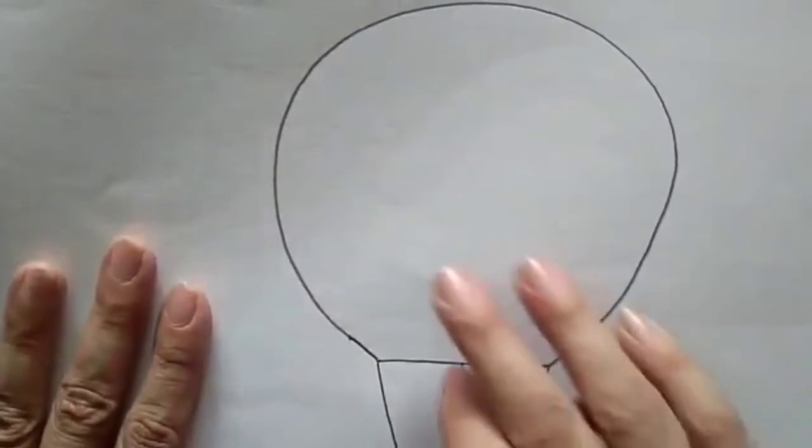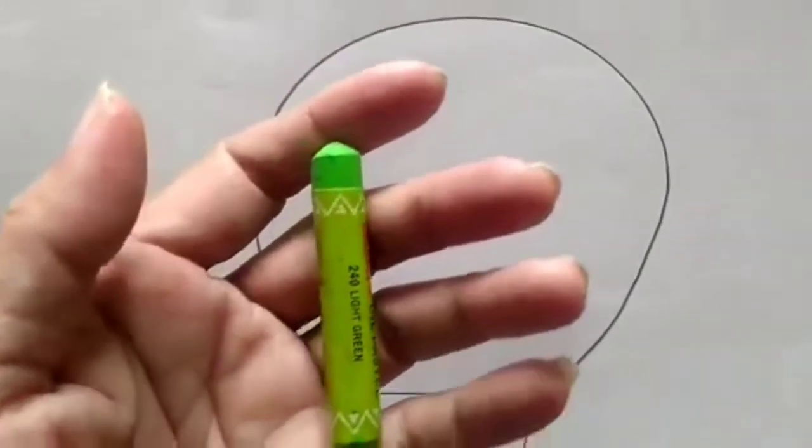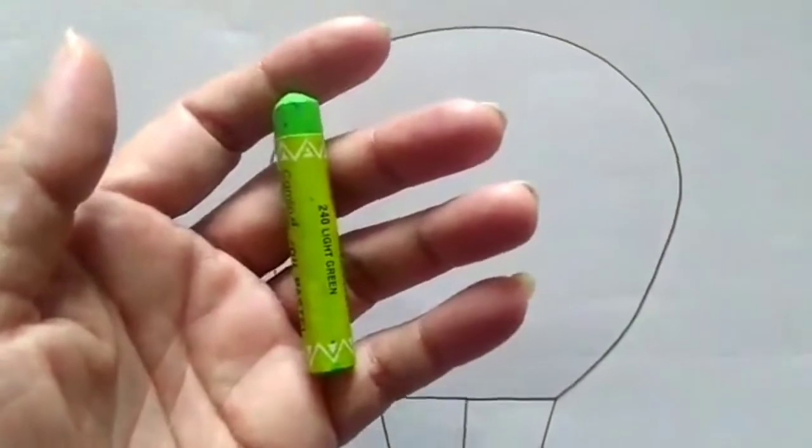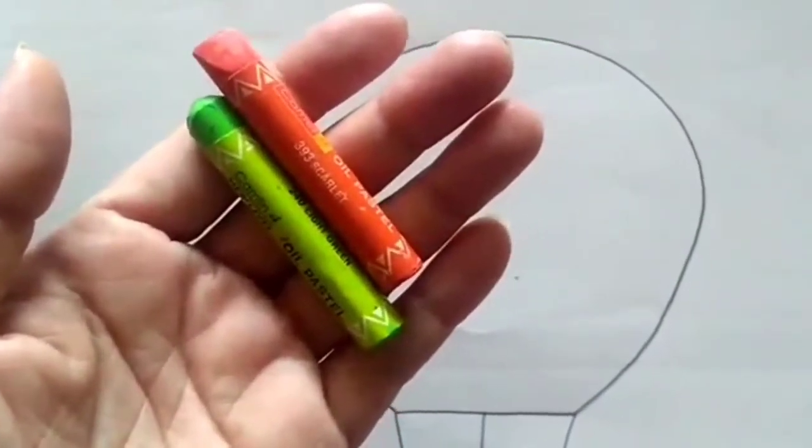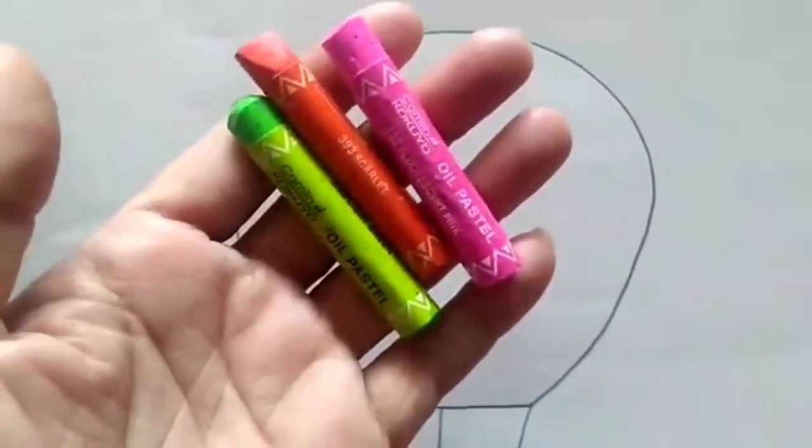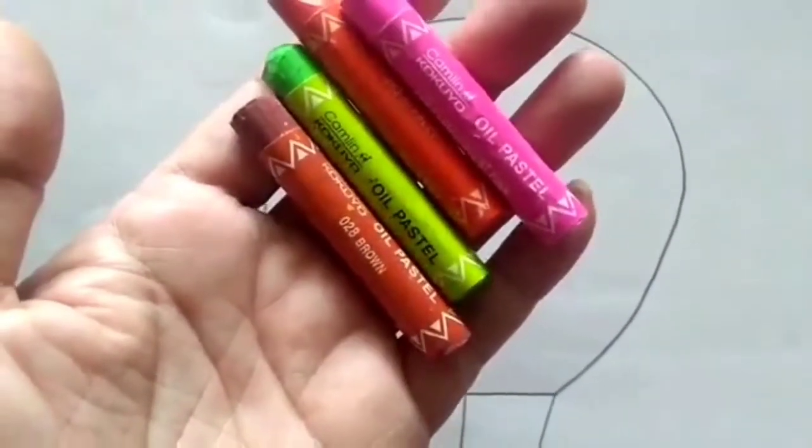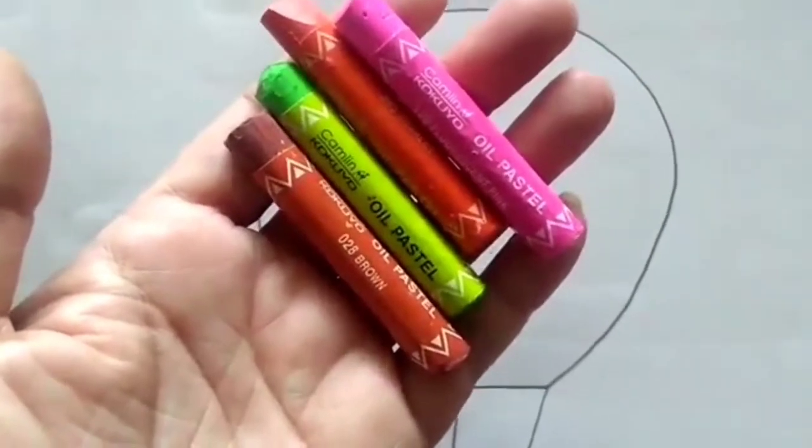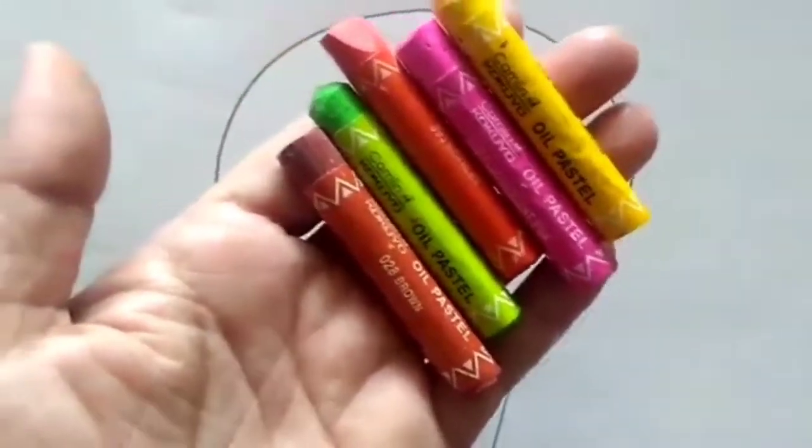Now I want to color this. I want to make it actually colorful. So let's take green color. Then other than green I will take peach color also. I will take pink. I will take another shade of brown. We haven't taken yellow, let us take yellow also. And then I will take a shade of blue.